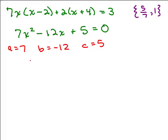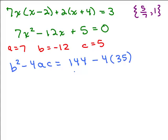Using the quadratic formula, our values are A equals 7, B equals negative 12, and C equals 5. Before plugging in, let's figure out what B squared minus 4AC is — that's what goes under the radical. B squared is negative 12 times negative 12, which is 144, minus 4 times A times C: 4 times 7 times 5 equals 4 times 35 equals 140. So B squared minus 4AC equals 4, and we'll have the square root of 4 under the radical.